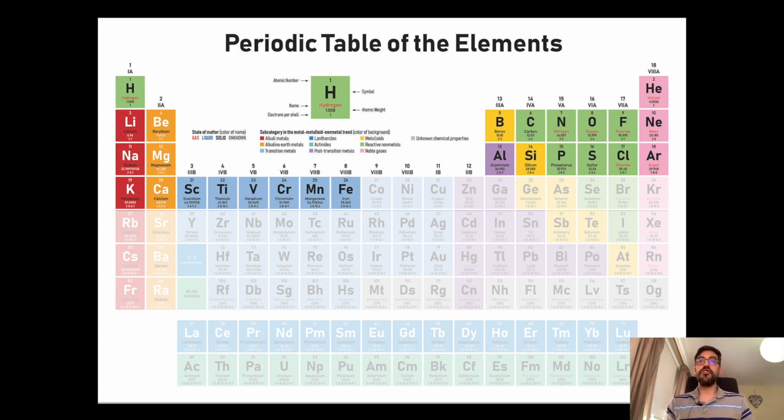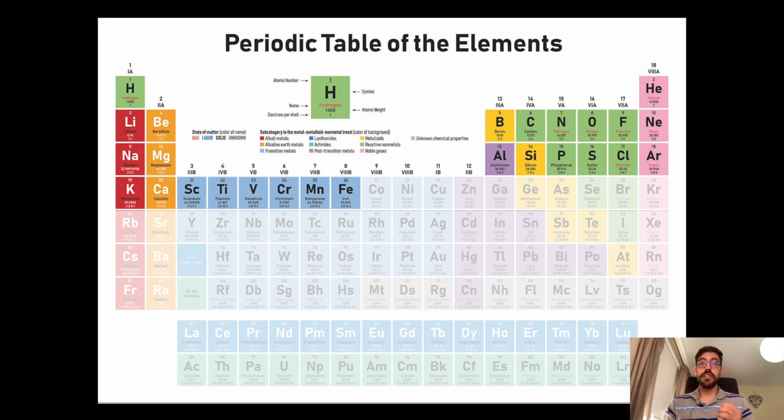The problem is that to generate heavier elements than iron, we need a process on which we can capture loads of neutrons very quickly, so we can build up elements before the reaction becomes inefficient and we get stuck without producing them. This process is known as R process, and as you can see here, it's very explosive, creating heavy elements, those with higher number of neutrons and protons at their core, in fractions of seconds.